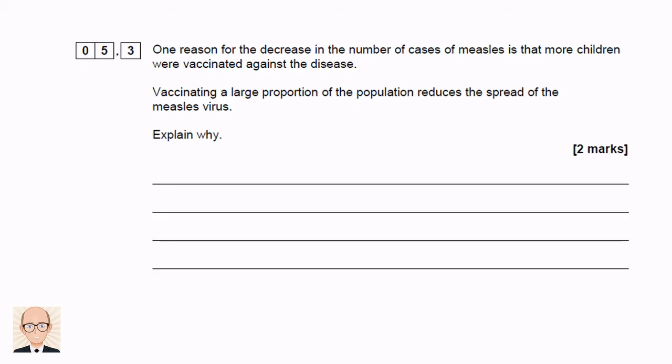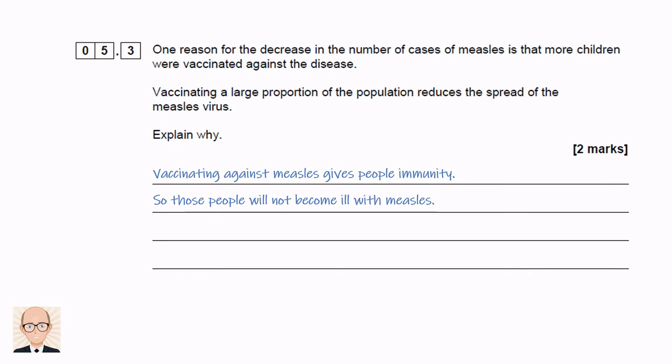So what can we write? We just need to carefully summarise: vaccinating against measles gives people immunity so those people will not become ill with measles. This means there is less chance of non-vaccinated people becoming exposed to the virus.